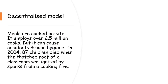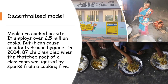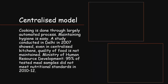The first implementation model is the decentralized model, where meals are cooked on site by local cooks and helpers. It employs over 2.5 million cooks or helpers, providing them jobs. However, it can cause accidents and poor hygiene if proper infrastructure like kitchen sheds and utensils are not present. In 2004, 87 children died in an accident when the thatched roof of a classroom was ignited by sparks from a cooking fire.